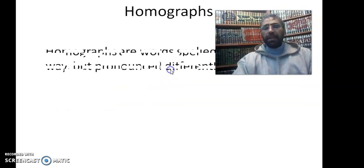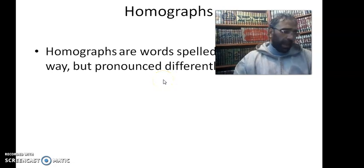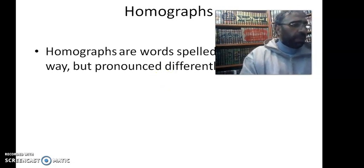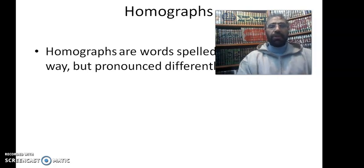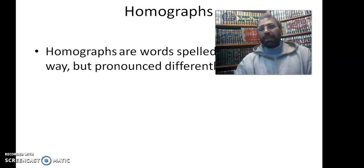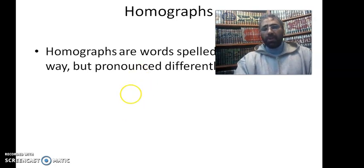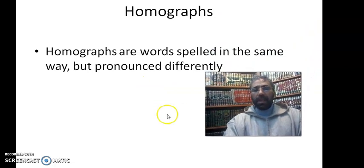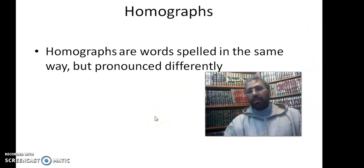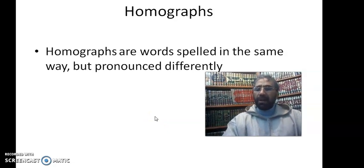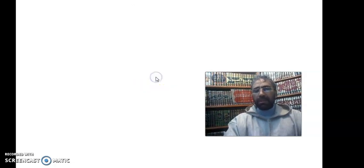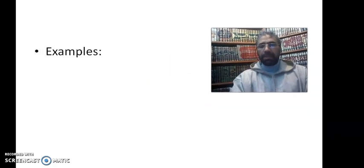Homographs is another sense relation. And again, sense relations refers to the relations of meaning between words. So homographs are words that are spelled in the same way, they are written in the same way, but they are pronounced differently. They have different pronunciations. Homographs are spelled in the same way but are pronounced differently.